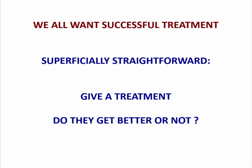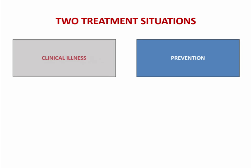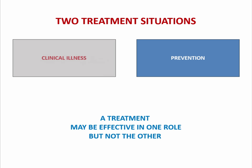Turning to treatment — obviously everyone wants successful treatment. There are two treatment situations: one in which you treat somebody who is clinically ill, and another in which you treat somebody who is not ill to prevent their becoming ill. In prion disease, prevention would apply to people who carry a mutation and are at risk of developing disease. A treatment that's effective in one role — such as treating clinical illness — may not be effective in the other role of prevention.